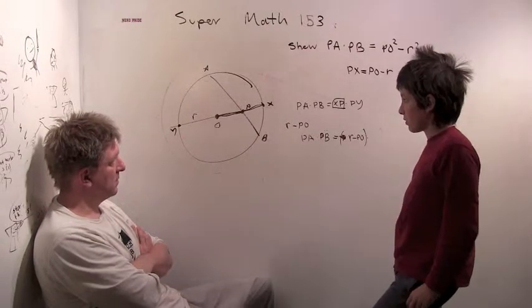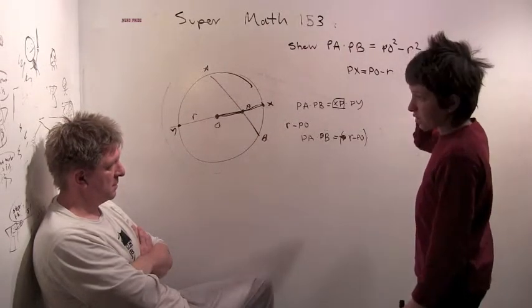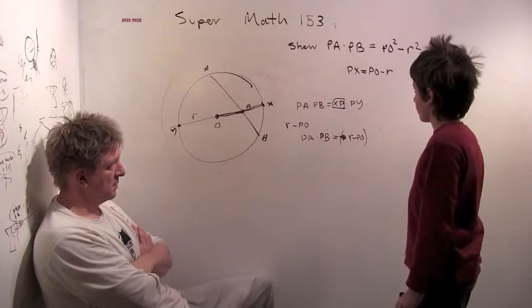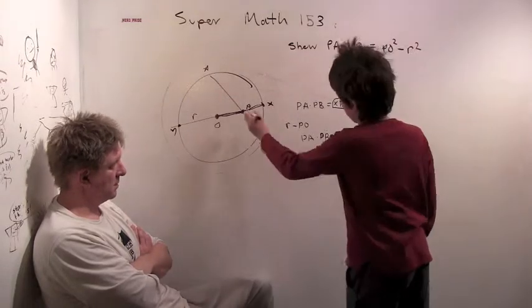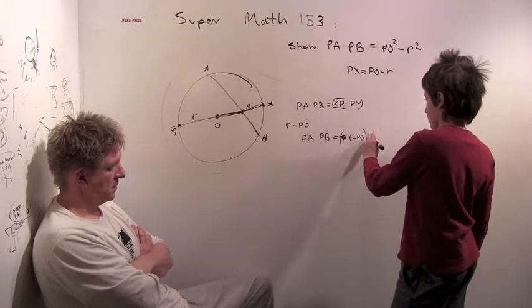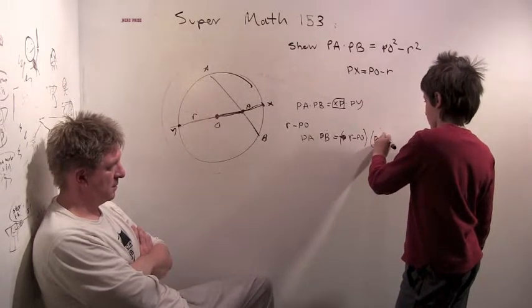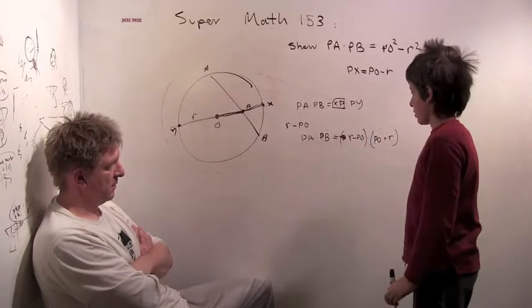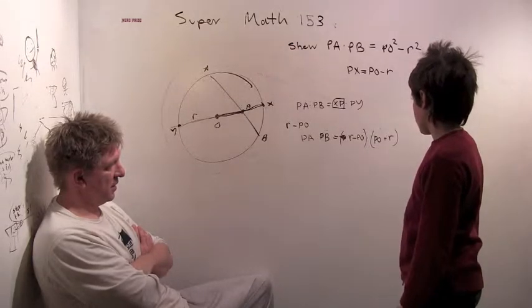Well, it's PO, it's PO plus R. It's the diameter stat. Okay. So, what does that multiply out to be?